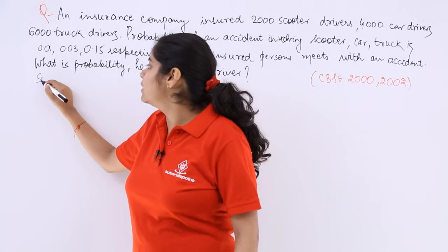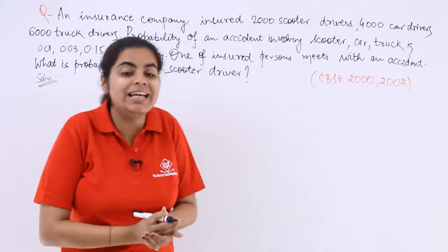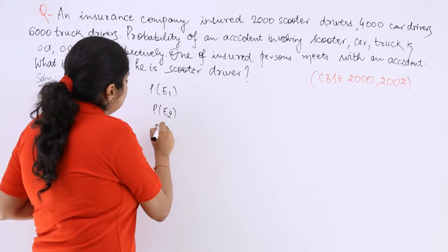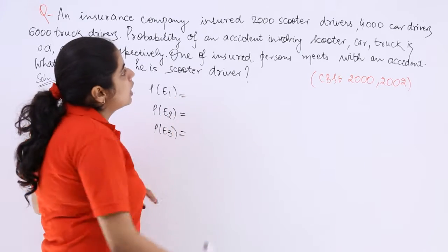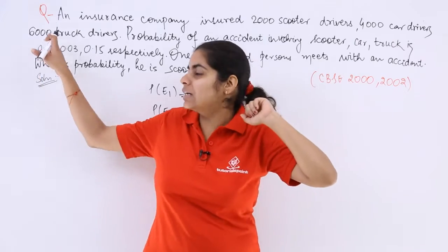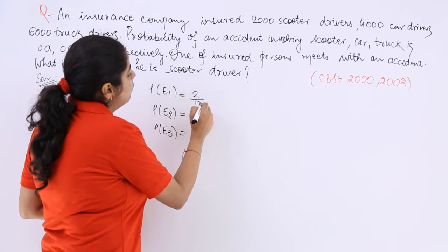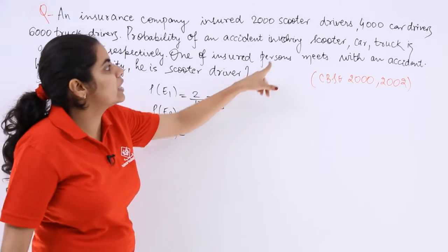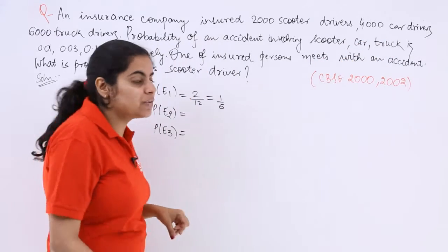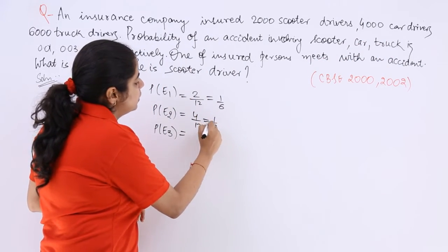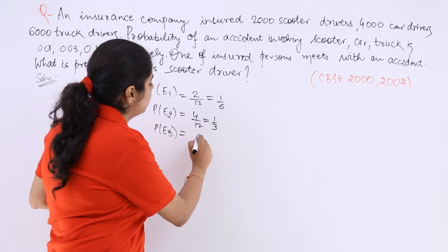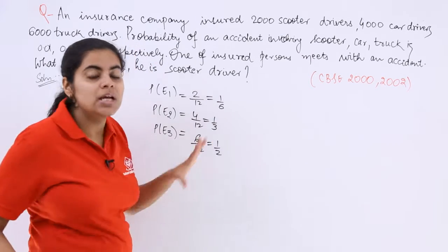Let P(E1), P(E2), and P(E3) represent the probabilities for each driver type. The total is 2000 + 4000 + 6000 = 12,000. So P(E1) = 2000/12000 = 1/6 for scooter drivers. Similarly, P(E2) = 4000/12000 = 1/3 for car drivers, and P(E3) = 6000/12000 = 1/2 for truck drivers.